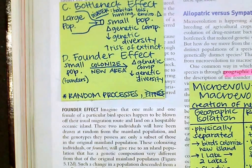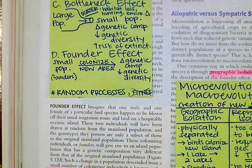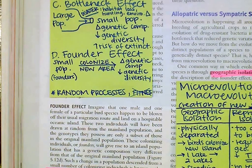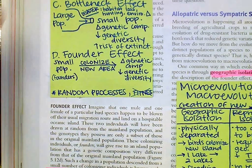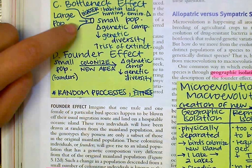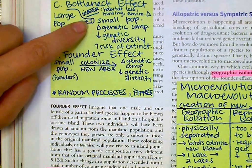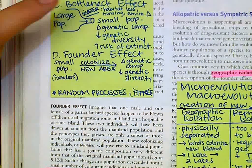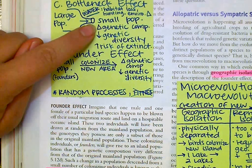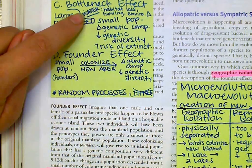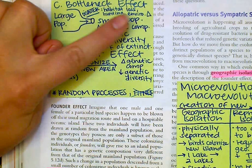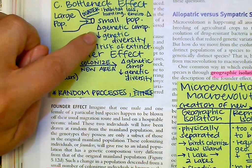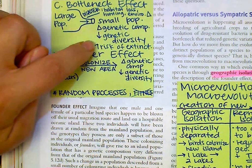Next we have the bottleneck effect, which happens after some sort of disaster usually. There's a large population that goes through this bottleneck — kind of like a two-liter soda bottle. There's a small population, a change in genetic composition due to a disaster like habitat loss, hunting, or environmental change, lower genetic diversity, and a high risk of extinction.